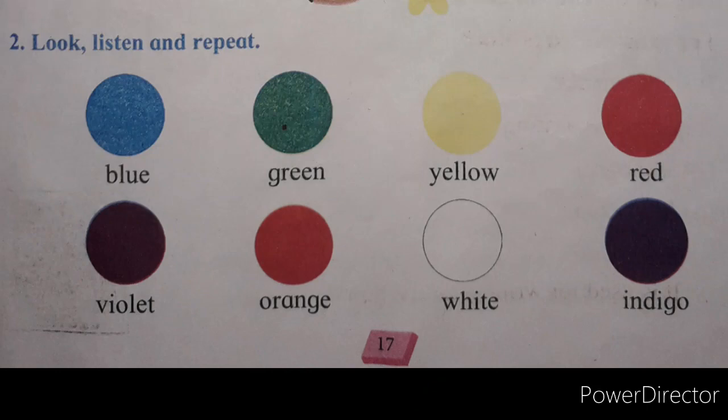Children, we are going to start our English subject video for Standard One. In our previous video we learned colors names, so let's revise once again: blue, green, yellow, red, violet, orange, white, and indigo.